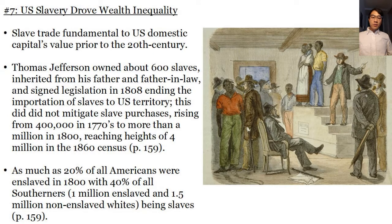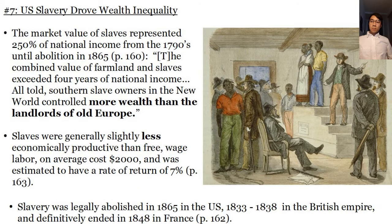The seventh claim Piketty makes is that the slave trade drove US wealth inequality. Thomas Jefferson, for example, owned about 600 slaves and signed legislation in 1808 ending the importation of slaves to US territory. However, this did not mitigate slave purchases, rising from 400,000 domestically in the 1770s to more than a million in 1800, reaching as high as 4 million in the 1860 census. As much as 20% of all Americans were enslaved in 1800, with 40% of all Southerners — that is, 1 million enslaved versus 1.5 million non-enslaved — being slaves. The market value of slaves represented 250% of national income from the 1790s until abolition in 1865. To quote Piketty: the combined value of farmland and slaves exceeded four years of national income. Southern slave owners in the New World controlled more wealth than the landlords of old Europe.